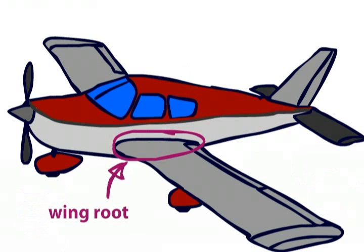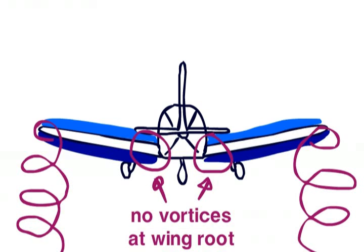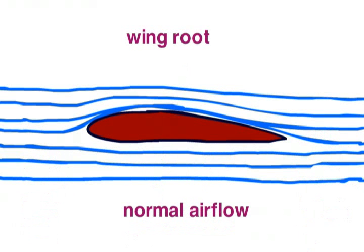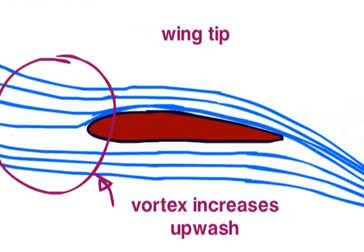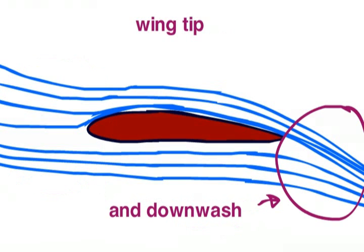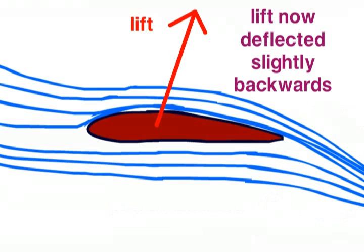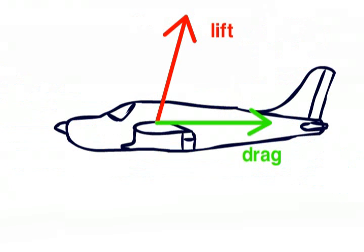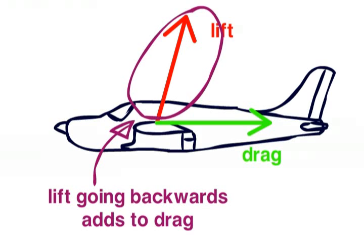At the root of the wing, where vortex action is not felt too much, airflow is like this. However, at the wingtips, where there is a lot of the vortex action going on, airflow is altered to become like this. As you can see, the air is forced upwards in front of the wing and then forced downwards behind it. This alteration of the air means that the lift generated by the wing is slightly deflected backwards. This lift force going backwards now adds to the drag force, and is the induced drag of the aircraft.